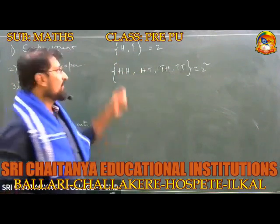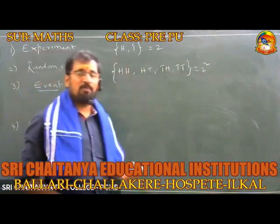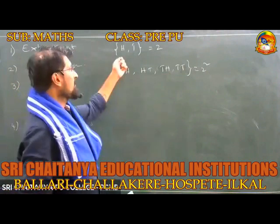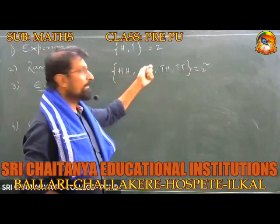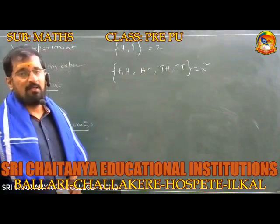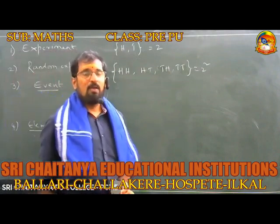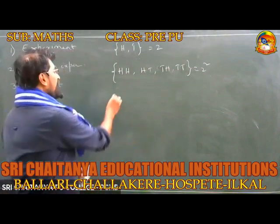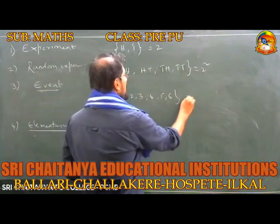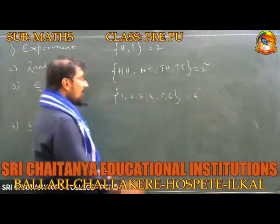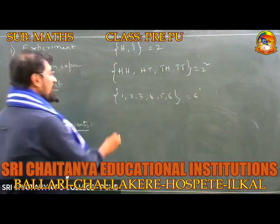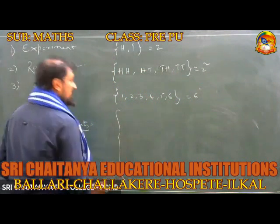For the random experiment of tossing a coin, there are two elementary events — one is H and another one is T. When a die is rolled once, the number of elementary events are 1, 2, 3, 4, 5, 6, which is six. If two dice are rolled, the number of elementary events is 36.